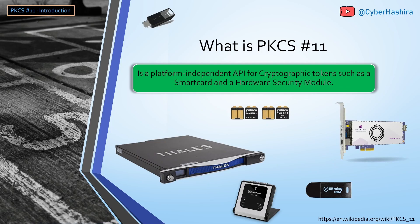PKCS#11 is a platform-independent API used for performing cryptographic operations on a hardware device. This hardware can be a smart card, a USB token, or a hardware security module. PKCS#11 provides a low-level interface to perform various crypto operations on hardware. A developer can make use of the PKCS#11 API to write an application that can utilize these hardware devices. PKCS#11 defines many algorithms, different kinds of objects, and various functions for all kinds of crypto operations.